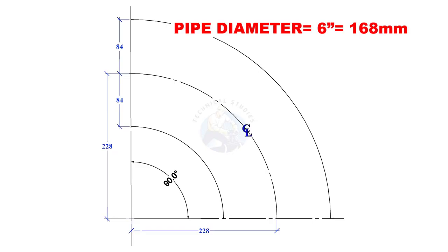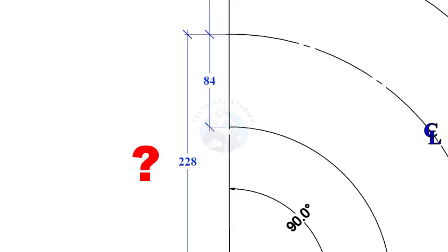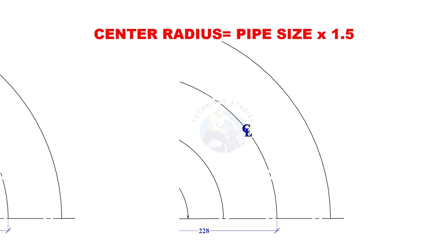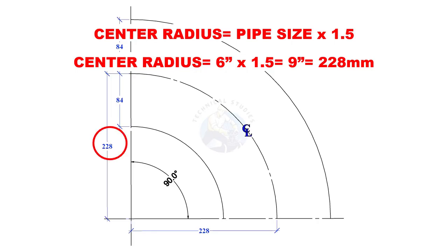This is a long-radius mitre bend. How to calculate the center radius of a long-radius elbow: multiply the pipe size by 1.5. 1.5 is a constant. Here, the answer is 228 millimeters.